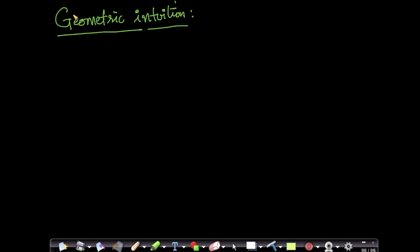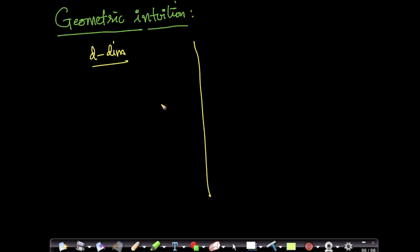Let us understand the geometric intuition of t-SNE. I have a d-dimensional space and I am trying to embed these points into a two-dimensional space. This is my d-dimensional space and this is my 2D space. Let us take a simple example.